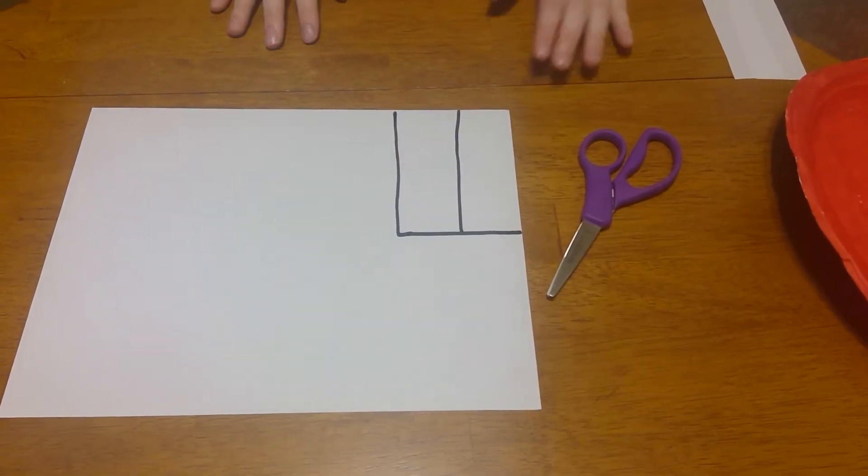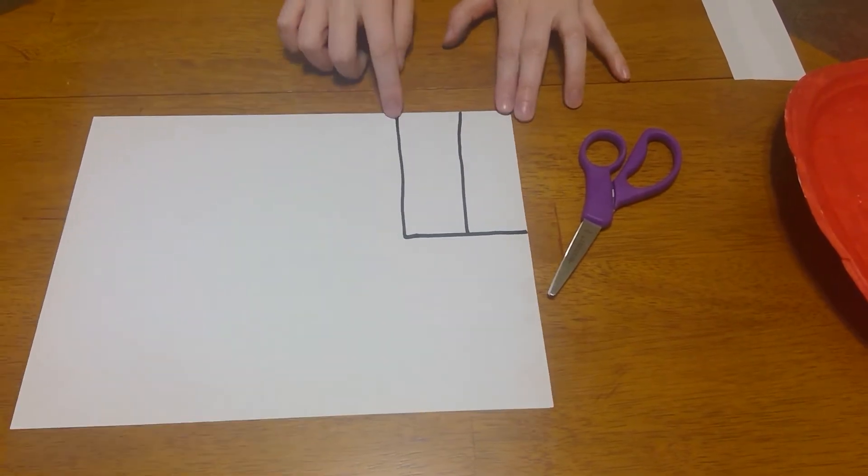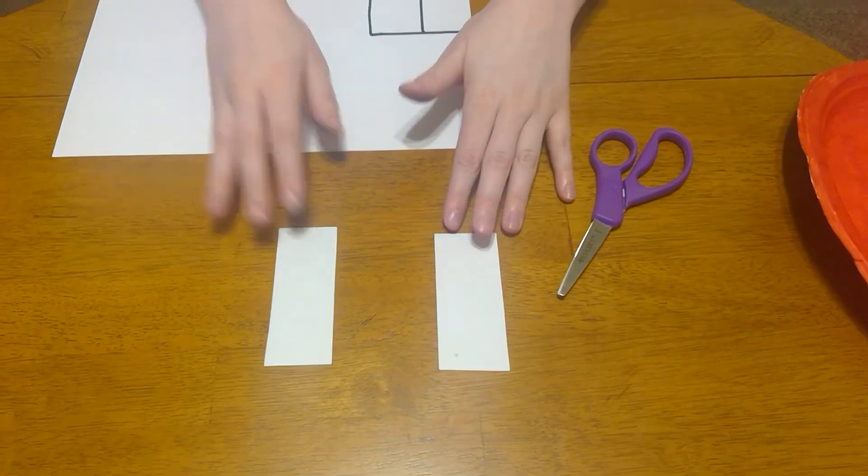Using your paper, ask an adult to cut out two big rectangles. Once they're cut out, they should look like that.